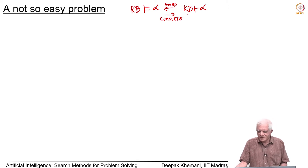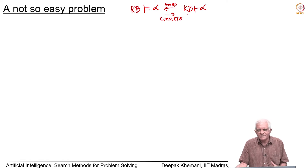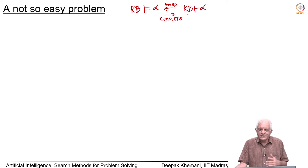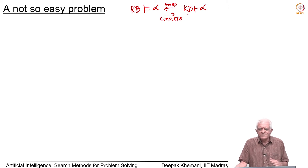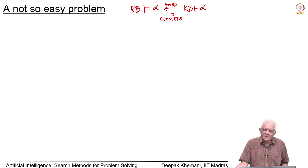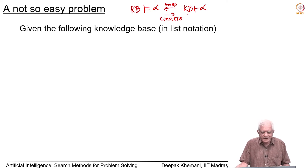Let us look at a not-so-easy problem. When you are looking at this problem, you must remember that logic is formal in nature — we work with symbols and manipulate symbols. The meaning behind those symbols is only in our heads, at least as of now. Logic works only with the form; it does not work with meaning.